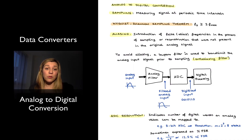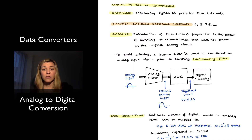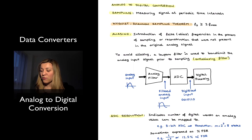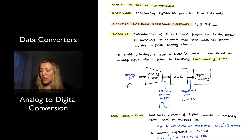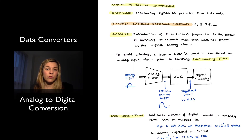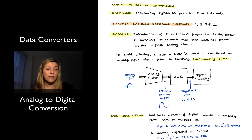If I sample at less than twice the maximum frequency, I will run into aliasing, so when I try to reconstruct my signal I will see frequency components that were not in the original. To avoid aliasing — since any analog signal is likely to have high-frequency noise — the first step is to band-limit the signal. We do that via an initial analog filter. The first part of the digital signal processing system corresponds to the analog-to-digital conversion, where the signal is first run through an analog filter to band-limit it so we can sample at typically twice the maximum frequency or slightly higher.